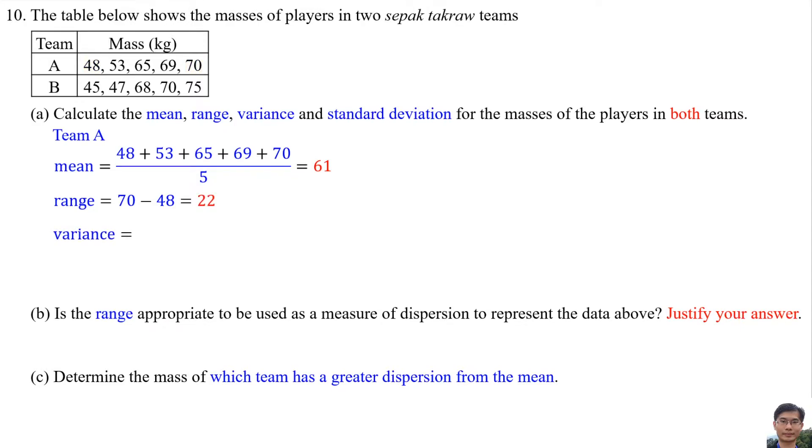Variance: find the square of all the masses in Team A and add all of them, then divided by the total number of players—there are 5 players—and then minus the mean squared, 61 squared. So the variance is 78.8. Standard deviation is the square root of variance, square root of 78.8, so the standard deviation is 8.877.